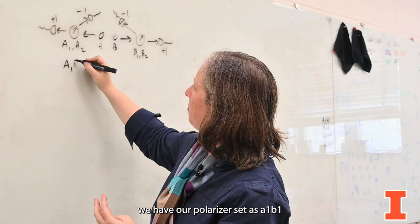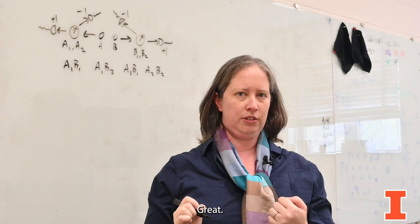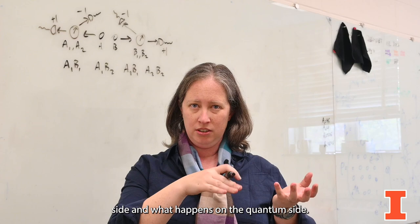So that means we have to make four different measurements. We have to jointly measure where we have our polarizer set as A1B1, as A1B2, as A2B1, and as A2B2.